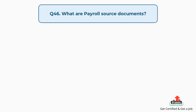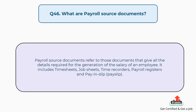Question number forty-six: What are payroll source documents? The answer is, payroll source documents refer to those documents that give all the details required for the generation of the salary of an employee. They include timesheets, job sheets, time recorders, payroll registers, and payslip.